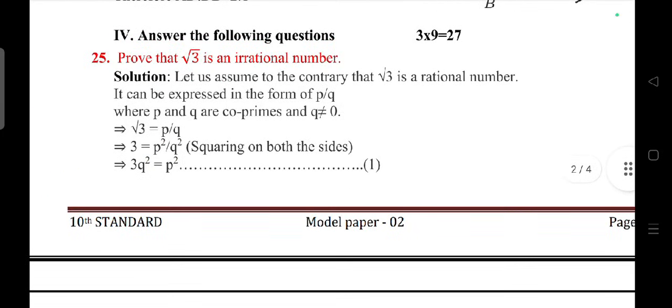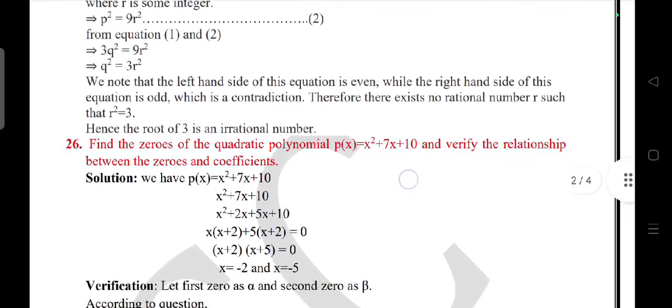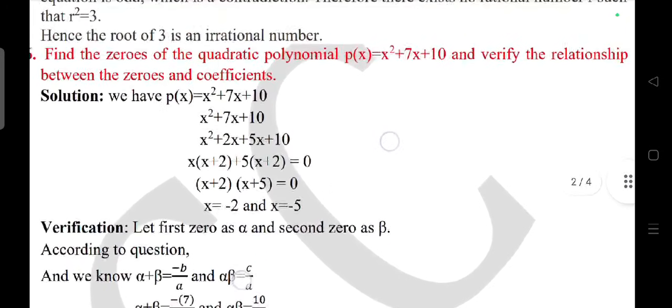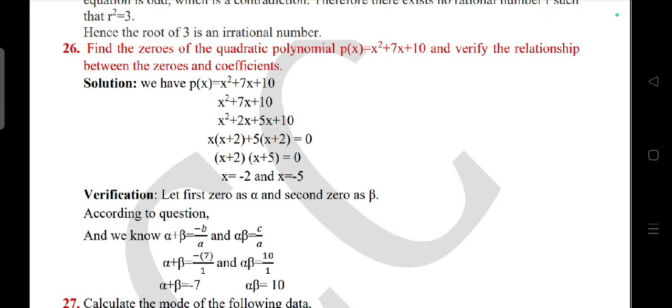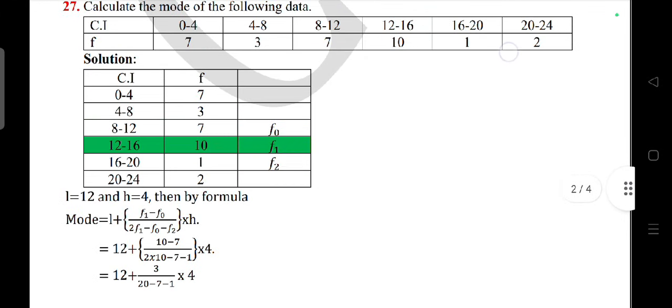Prove that root 3 is an irrational number. This is the answer. Instead of root 3 they may give root 2 or root 7, but pattern will be same. Find the zeros of the quadratic polynomial x square plus 7x plus 10, verify the relationship between the zeros and coefficient. Calculate the mode of the following or calculate the mean of the group data. These are must and should questions.